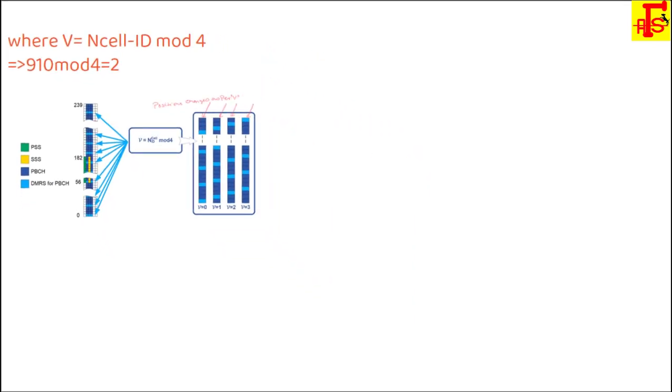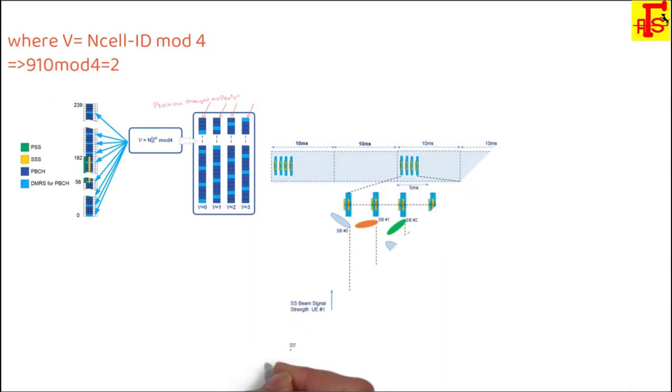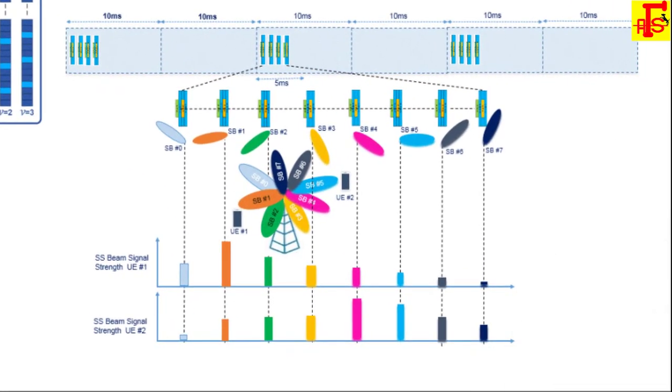Now UE measures the signal strength of PBCH DMRS of each SSB and detects for a certain period from the measurement result. UE can identify the best SSB index with stronger signal. On the basis of measurement, UE decides which one is the best beam. Then it decodes PBCH MIB content information such as SFN, SSB index, raster, offset, DL numerology, RMSI configuration, DMRS location and cell barring related information. All these things are decoded after reading the DMRS signals and PCI information. After decoding, by using DMRS reference signal, you will decode PBCH information where MIB and SIB is located.